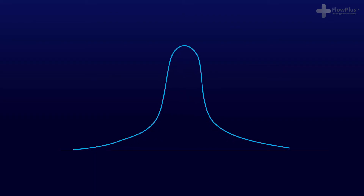So what does Six Sigma mean? Without getting too technical, all processes have inherent variability. The same way that if you were a baker, each loaf of bread will be slightly different in appearance, size, weight, etc. If you were to measure the weight of each loaf of bread after taking a large amount of samples, the graph would end up looking something like this, with the average weight being 800 grams but a spread of different weights.